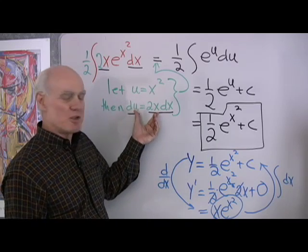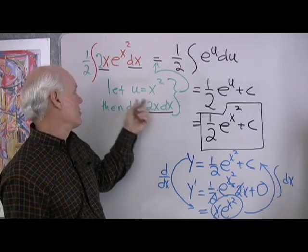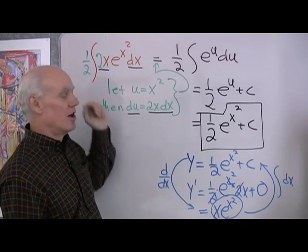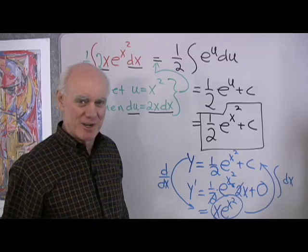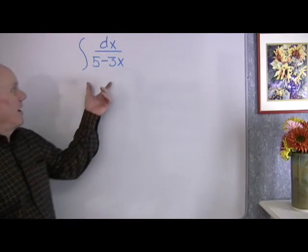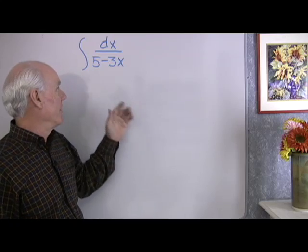My integration by substitution here is working very well. Anytime I'm off by a constant, that's no problem. I'll just put the constant in, multiply by its reciprocal on the outside, and I'm all set. Let's try another one of these. This time I have dx over 5 minus 3x, and I want to find the anti-derivative of that.